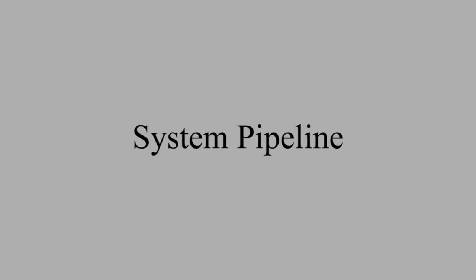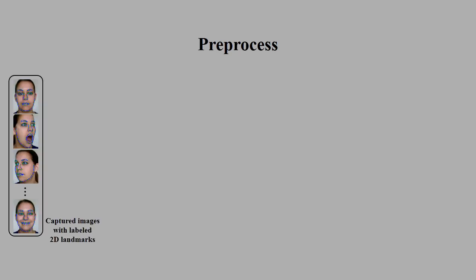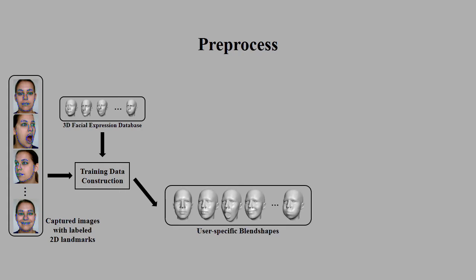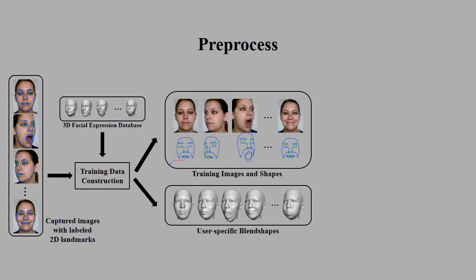Now we briefly describe our system pipeline. In a one-time preprocessing step, we ask the user to act out a set of standard facial expressions and capture the images. For each captured image, a set of 2D landmark points corresponding to certain face features are semi-automatically located. Given these labeled images and with the help of a 3D facial expression database, we compute a 3D expression blend shape model for the user and construct the training data of facial images and 3D shapes.